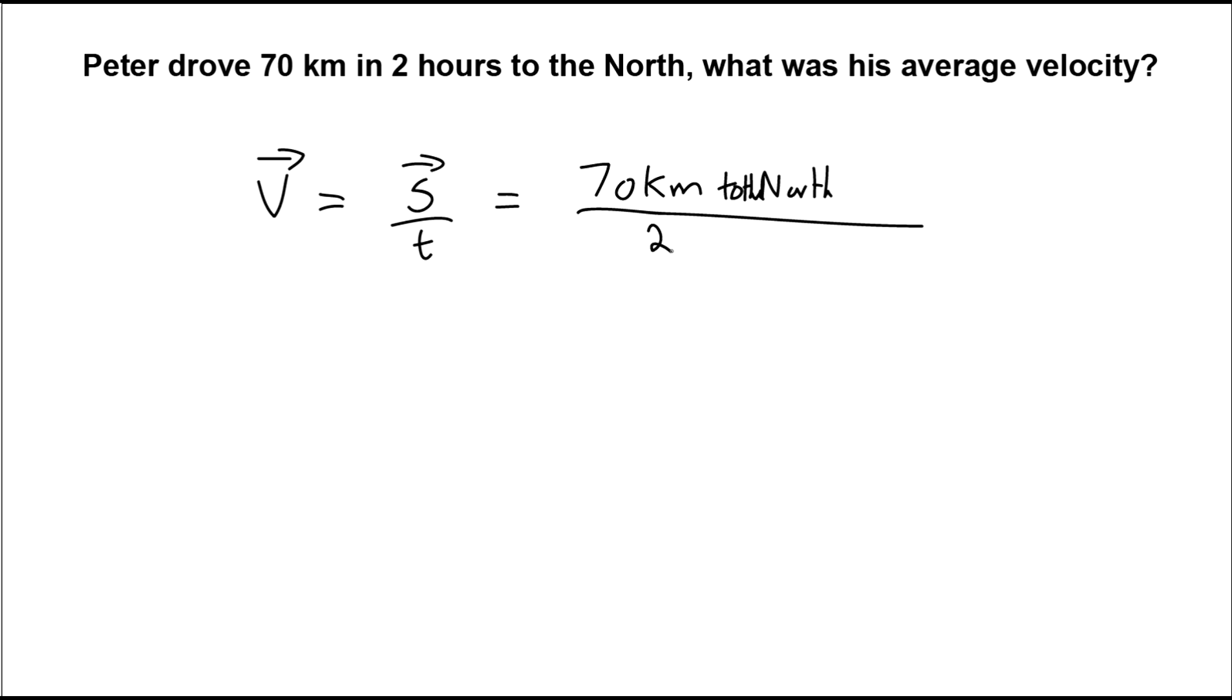Right, and that all occurs over two hours. So let's move this along. Okay, so you've got 70 over 2, so that's 35. That's the numerical component of this done.